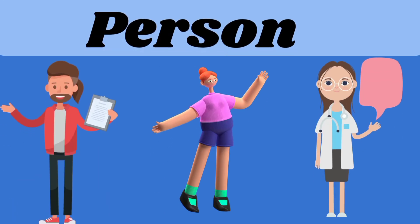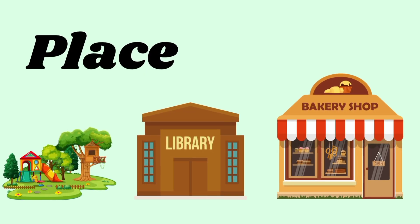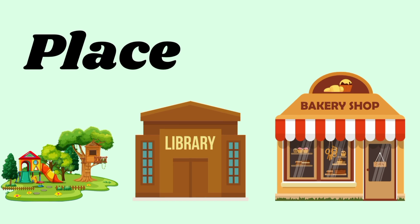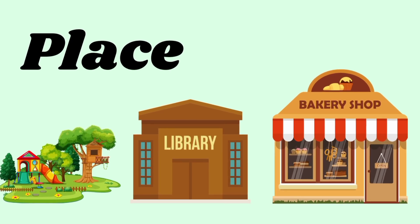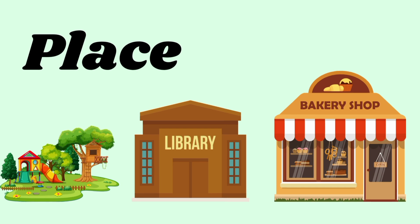Person means men, women, doctor and many more. Place means park, library and bakery shop.